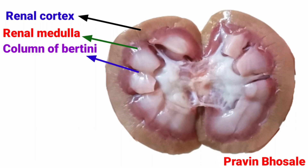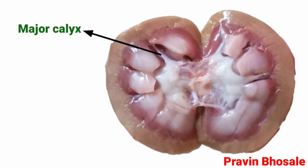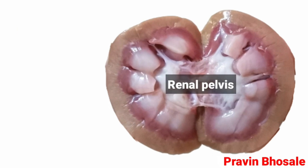The renal medulla consists of the loop of Henle and collecting duct. This is the column of Bertini — it is a medullary extension of the renal cortex in between the renal pyramids. Renal medulla consists of renal pyramids; each one is broader towards the cortex and tapers at the apex. The major calyx is formed by 2 to 3 minor calyces, and the major calyces further form the renal pelvis, which opens into the hilum. Through the hilum comes out the ureter.